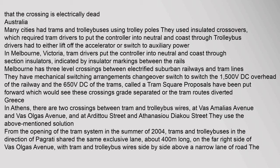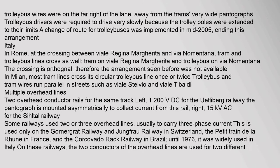In Athens, Greece, there are two crossings between tram and trolleybus wires, at Vas. Amalias Avenue and Vas. Olgas Avenue, and at Arditou Street and Athenasiou Diako Street. Trams and trolleybuses in the direction of Pagrati shared the same exclusive lane, about 400 meters long, on Vas. Olgas Avenue, with tram and trolleybus wires side by side. Trolleybus drivers were required to drive very slowly because the trolley poles were extended to their limits. A change of route for trolleybuses was implemented in mid-2005, ending this arrangement.